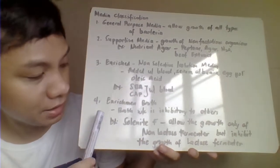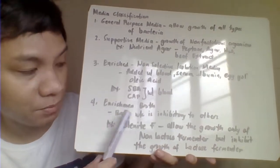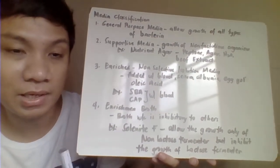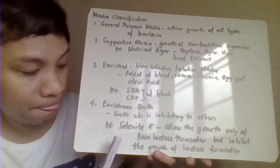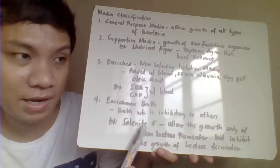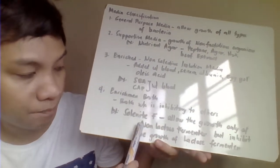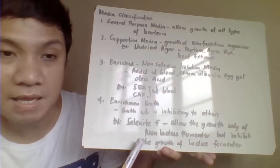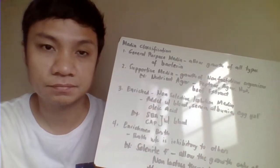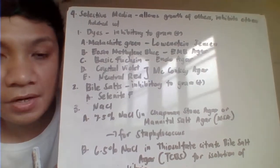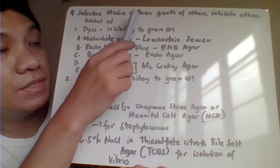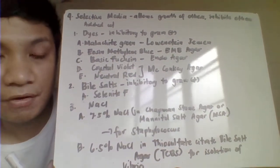Enrichment broth is simply enriched culture media in liquid form. An example is selenite F broth, which allows the growth of lactose non-fermenting organisms.